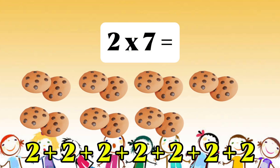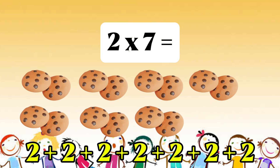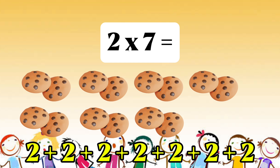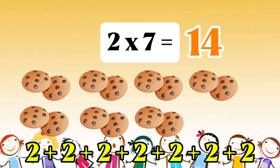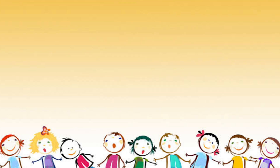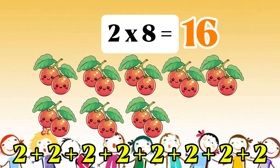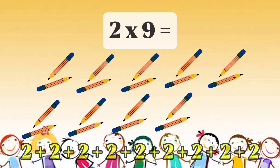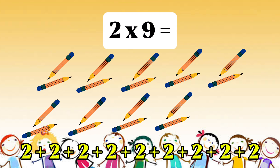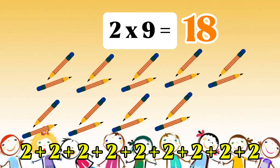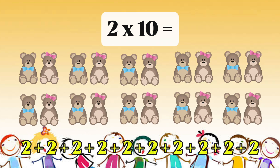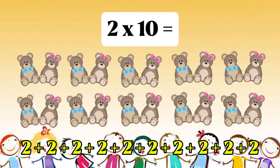2 multiplied by 7, or 2 times 7, equals 14. 2 multiplied by 8, or 2 times 8, equals 16. 2 multiplied by 9, or 2 times 9, equals 18. 2 multiplied by 10, or 2 times 10, equals 20.